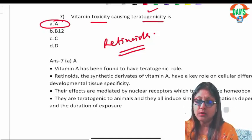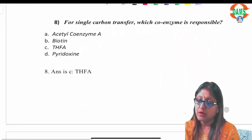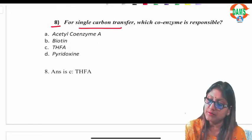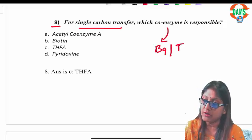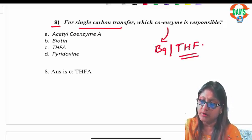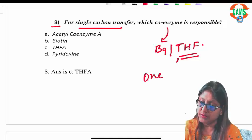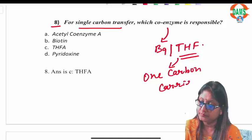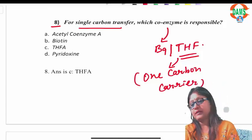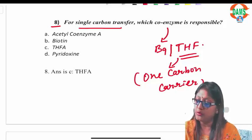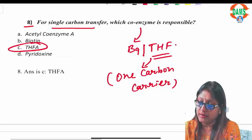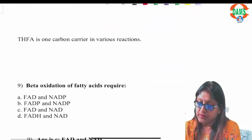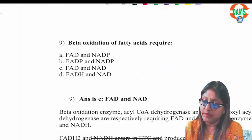Question eight: for single carbon transfer, which coenzyme is responsible? It is vitamin B9, which in active form is tetrahydrofolic acid. Tetrahydrofolic acid is the one carbon carrier. So folic acid is activated to tetrahydrofolic acid, which acts as a one carbon carrier.